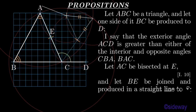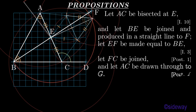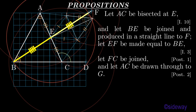Let AC be bisected at E, by Book 1 Proposition 10. And let BE be joined and produced in a straight line to F. Let EF be made equal to BE, by Book 1 Proposition 3. Let FC be joined, by Book 1 Postulate 1. And let AC be drawn through to G, by Book 1 Postulate 2.